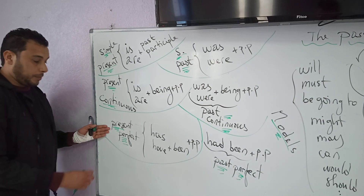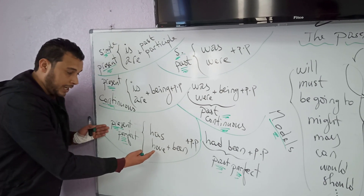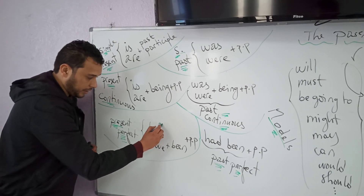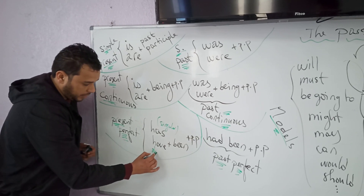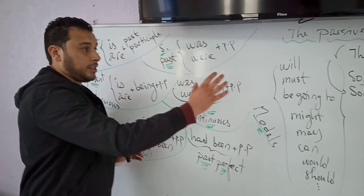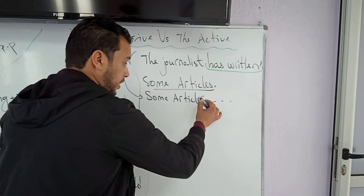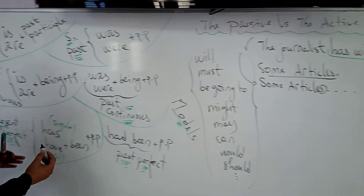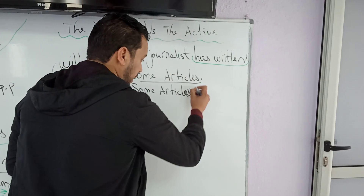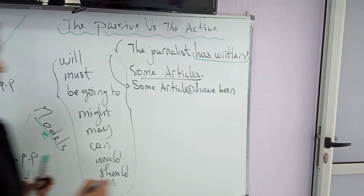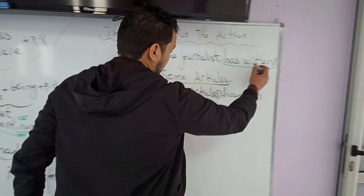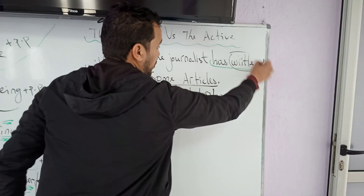Verb 'to be' in present perfect is 'has been' or 'have been.' The difference: 'has' is used for singular and 'have' is used for plural, depending on the subject pronouns. Going back to the sentence, 'some articles' is in the plural form, so we use 'have been' plus the past participle of the main verb 'write,' which is already in present perfect, so we use 'written.'